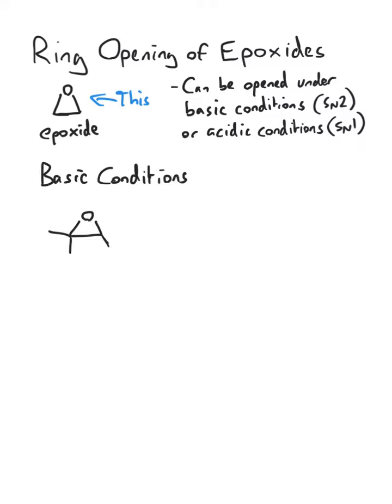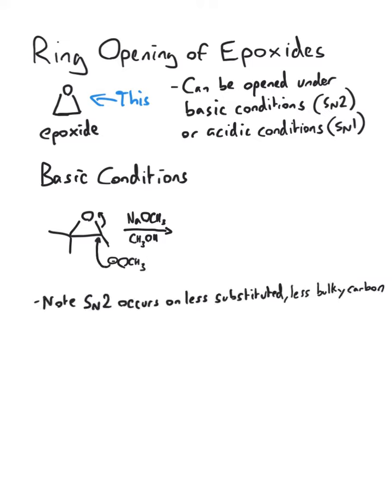Under basic conditions you have an SN2 reaction where your base or your nucleophile attacks the less substituted, less bulky carbon of the epoxide, breaking the ring. At which point that alkoxide anion that is formed then gets protonated or further used as a nucleophile.